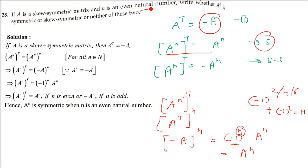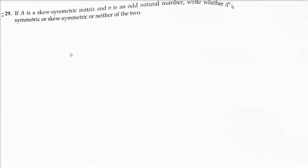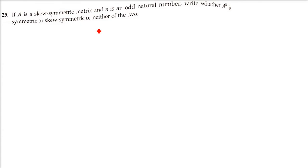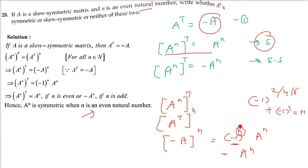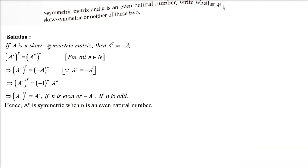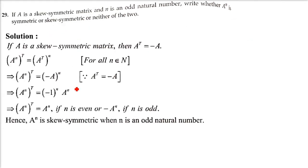For the final question, n is an odd natural number and A is skew-symmetric. Following the same steps, (Aⁿ)ᵀ = (-1)ⁿ · Aⁿ. Since n is odd, (-1)ⁿ = -1, so (Aⁿ)ᵀ = -Aⁿ, which means Aⁿ is a skew-symmetric matrix.